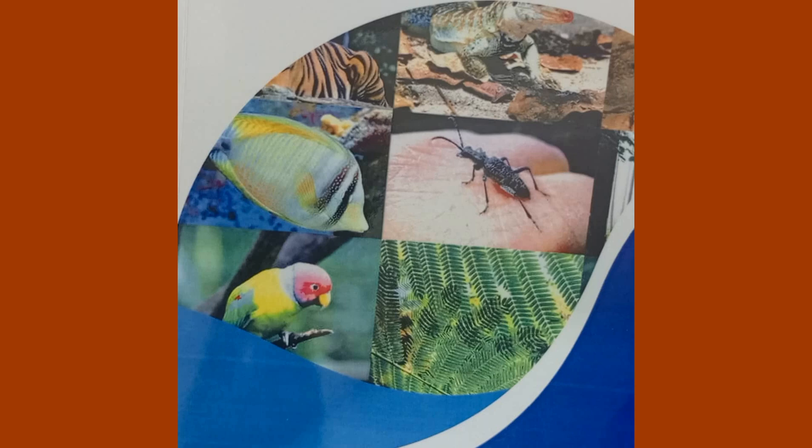Biological scientists study life at many different levels, and such levels include cells, tissues, organs, body systems, and organisms. But these are not all — apart from cells, tissues, organs, body systems, and organisms, biologists also explore populations, communities, ecosystems, biomes, and the biosphere at large.